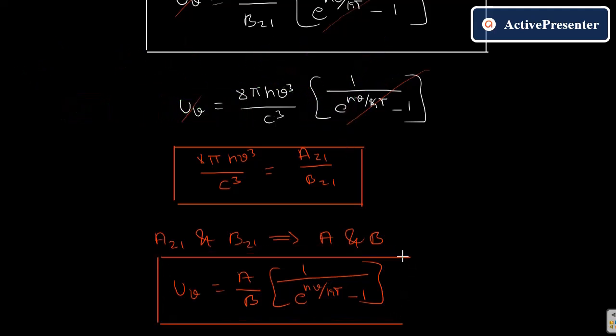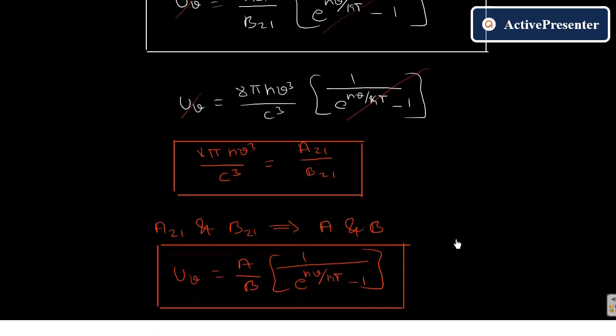I hope you now understand everything I tried to explain here. Don't forget to share this with your friends and subscribe to my channel — press the bell icon. This is the end of the derivation; this is the final equation for energy density with Einstein coefficients. Thank you.